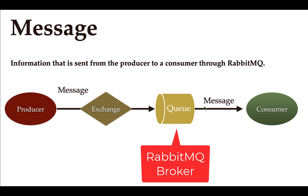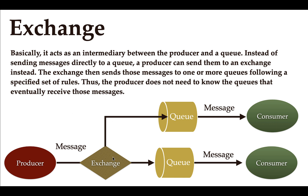Next, what is an exchange? An exchange acts as an intermediary between producer and queue. Instead of sending a message directly to the queue, a producer sends those messages to the exchange first, and then the exchange routes those messages to the respective queues using some configured rules.